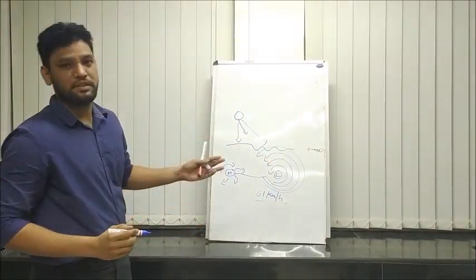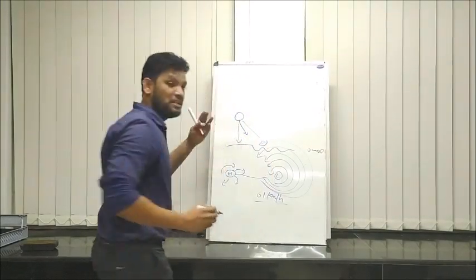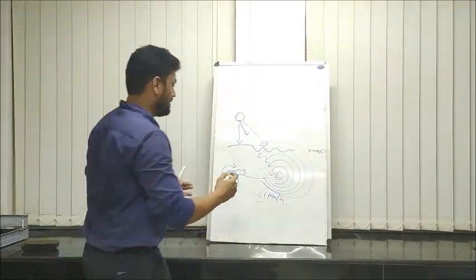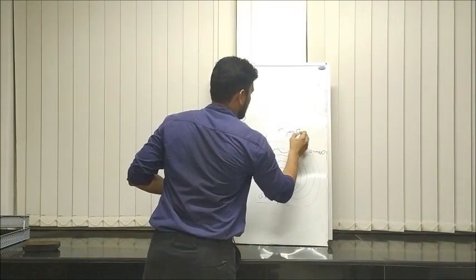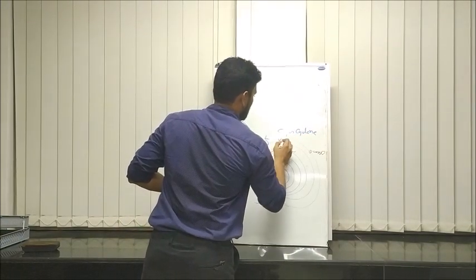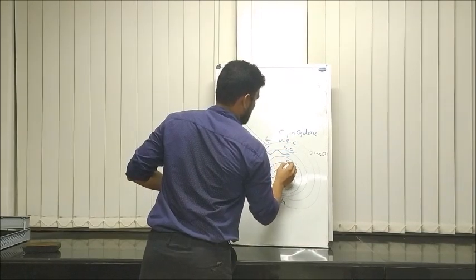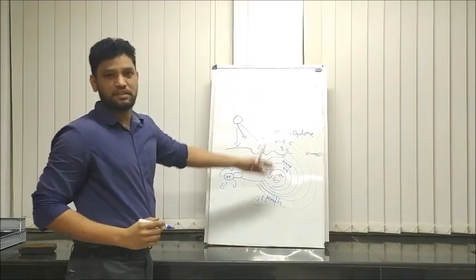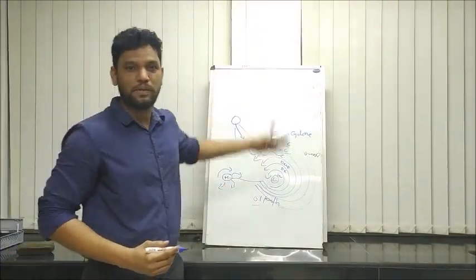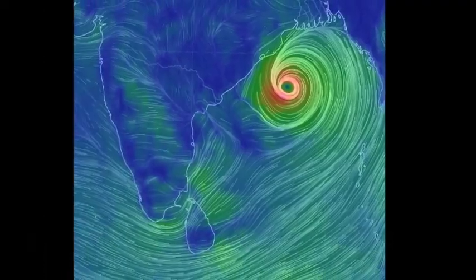When this cyclone intensifies again, it is called severe cyclone, and again it will intensify to very severe cyclone. If it's again intensified, then it is formed super cyclone. These are the levels - low pressure, depression, deep depression, cyclone, severe cyclone, very severe cyclone, super cyclone. This is how the cyclone forms and intensifies, how the maturation is going on.